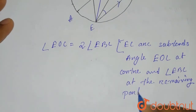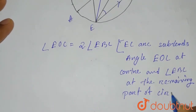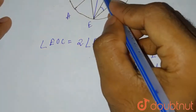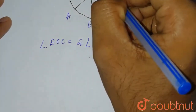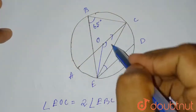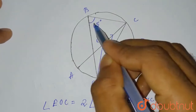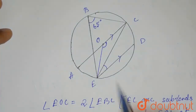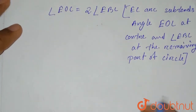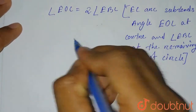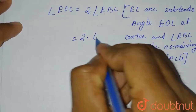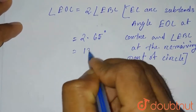Because it's the same arc producing two angles — one at the center and the other at the remaining part of the circle — the central angle is twice the inscribed angle. So putting in the value: angle EOC equals 2 times angle EBC equals 2 times 65 degrees, which gives 130 degrees.